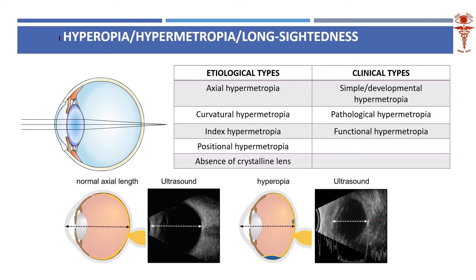Hypermetropia is colloquially called long-sightedness. Parallel rays of light, when the accommodation of the patient is at rest — meaning the ciliary zonules are not tense and the accommodative mechanism is not exerted, the ciliary apparatus is quiet — in that state, parallel rays of light are brought to a focus behind the retina.